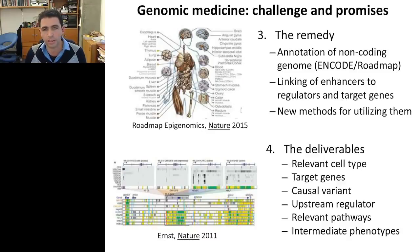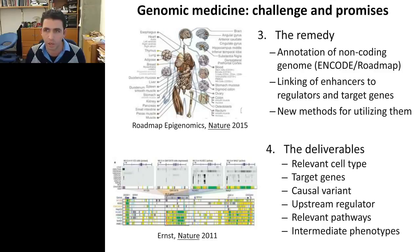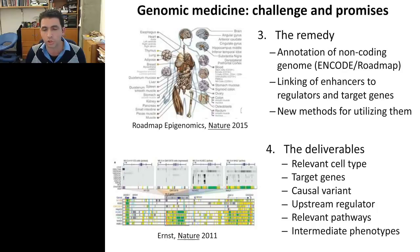NIH foresaw this and launched large initiatives for dissecting the function of the non-coding genome. The remedy proposed was to systematically annotate the non-coding genome through projects such as ENCODE, the Encyclopedia of DNA Elements, the NIH Common Fund Epigenomics Roadmap Project, and the EU Blueprint Project — annotating this genome across a very large number of cell types, in adults as well as in earlier developmental stages. The goal is to link enhancers and their regulators to the target genes they control.